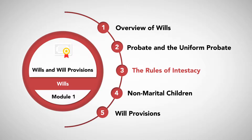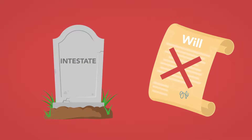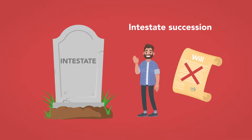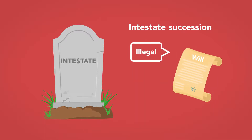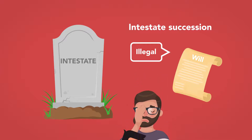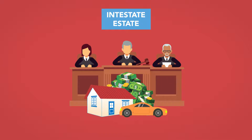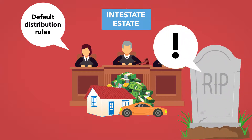The Rules of Intestacy. A person who dies without a valid will has died intestate, and her estate will be subject to the laws of intestate succession. This includes people who died without creating a will, and people whose will is not legally valid for reasons such as that it is not signed, improperly witnessed, or executed under duress or undue influence. An intestate estate is still subject to court-overseen administration, but the court will administer the estate pursuant to default distribution rules, regardless of what the deceased person may have wanted.